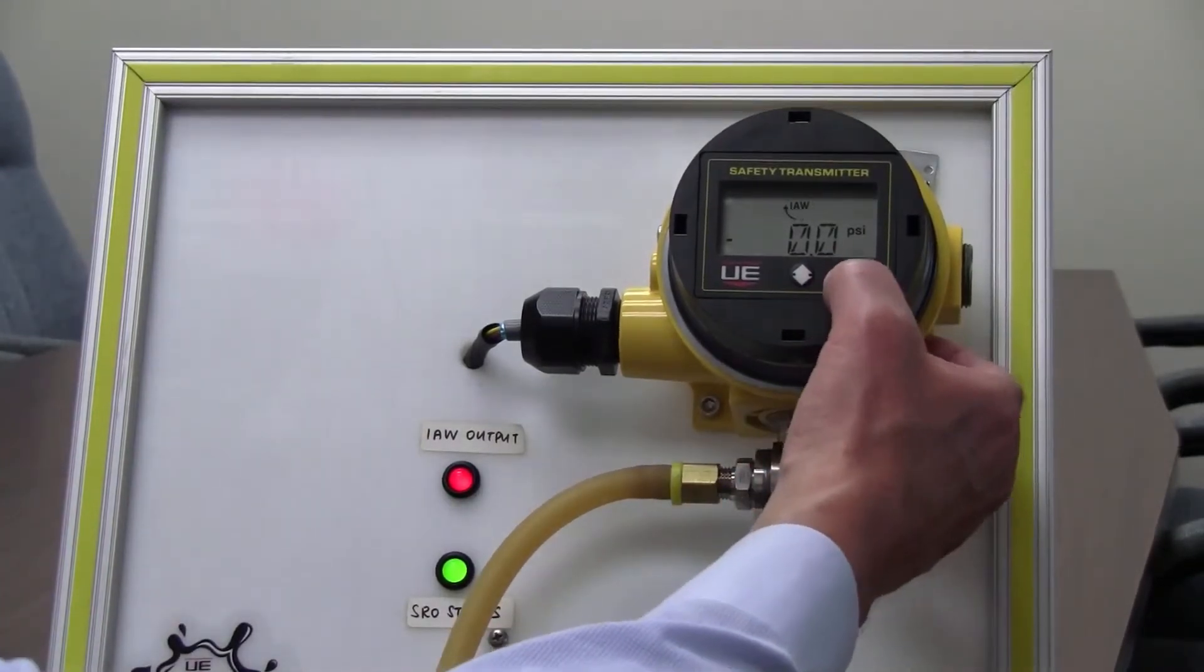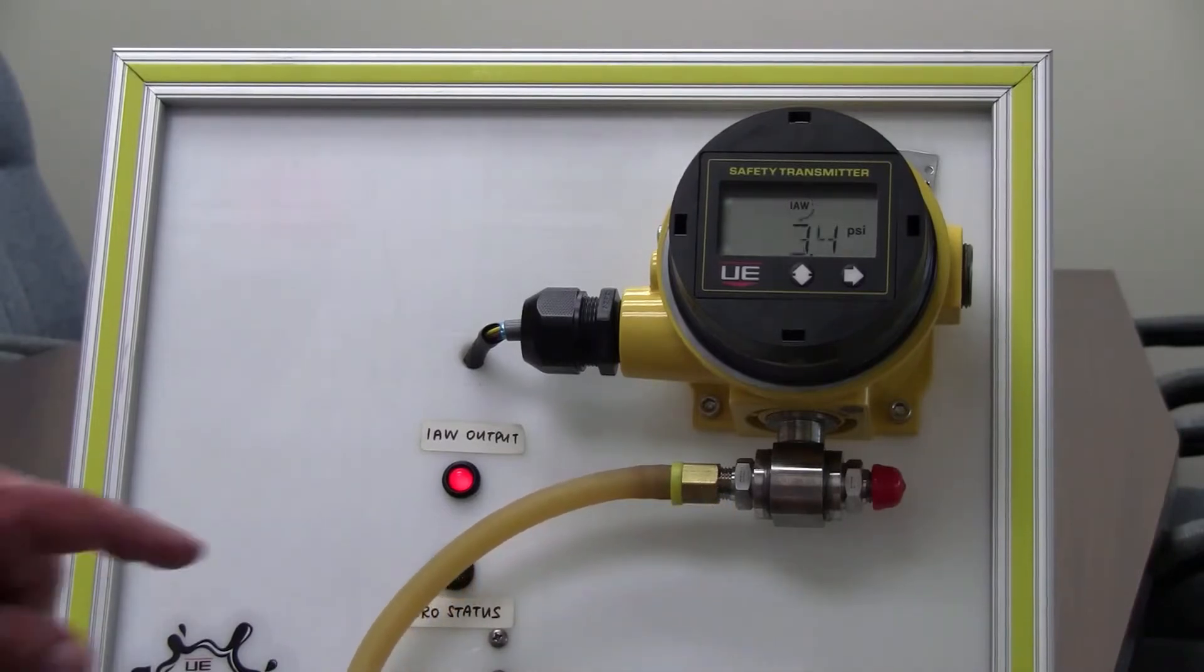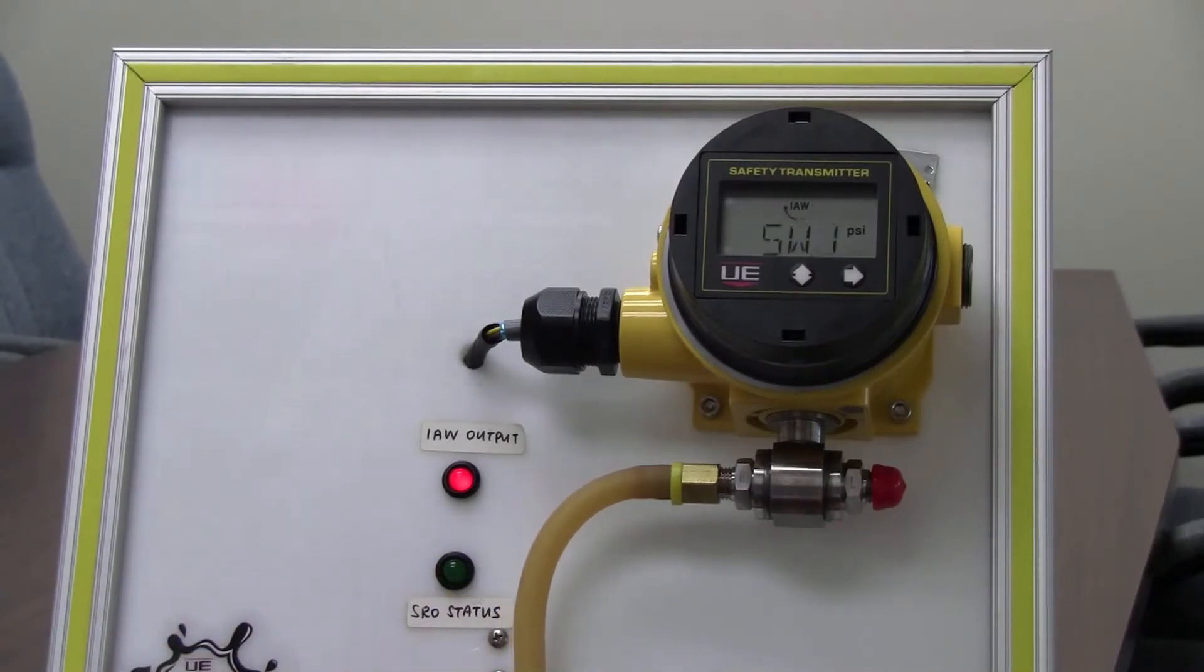To verify your set point in your dead band, simply hit the right hand arrow when you're in the process display mode. You'll notice those two values display and now I'm going to demonstrate the product by increasing the pressure up to the 3.1 set point. You'll notice that the green status light has gone off.